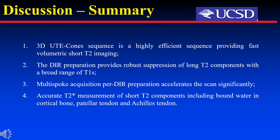In summary, the 3D UTE-CONES sequence is a highly efficient sequence providing fast volumetric short T2 imaging. The DIR preparation provides robust suppression of long T2 components with a broad range of T1s. Multi-spoke acquisitions per DIR preparation accelerates the scan significantly. Accurate T2* measurement of short T2 components was achieved, including bone water in cortical bone, patellar tendon, and Achilles tendon.